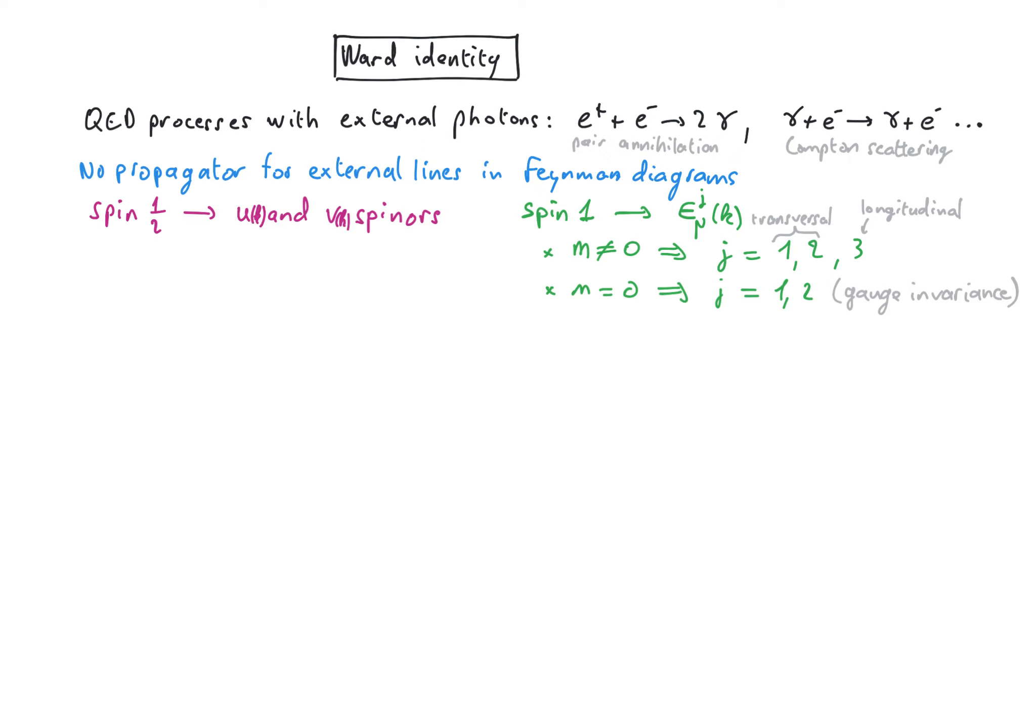So let's consider for instance the collision of two electrons leading to the production of a photon. The external photon carries polarization which will enter into the amplitude. Here I have written the amplitude for this process as a product of the polarization for the external photon times everything else which has to carry a Lorentz index in order to contract the one from the polarization vector.